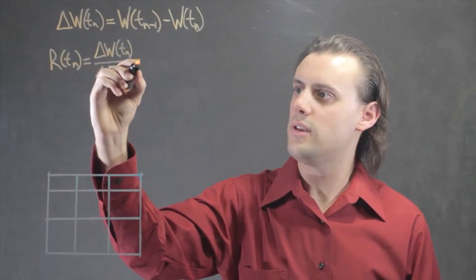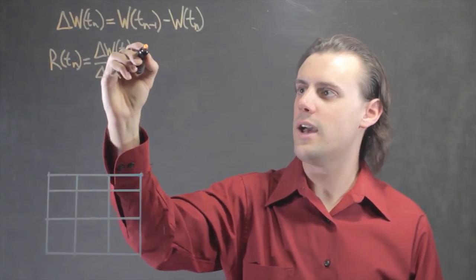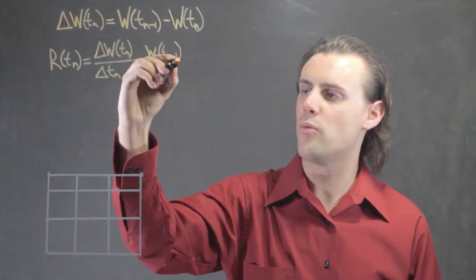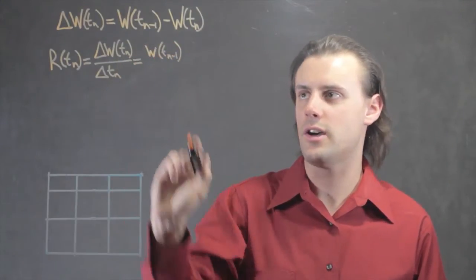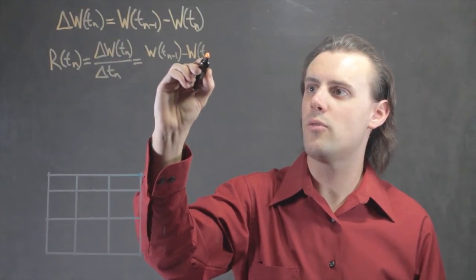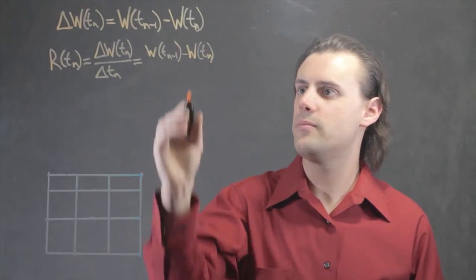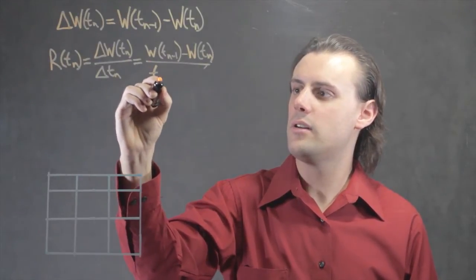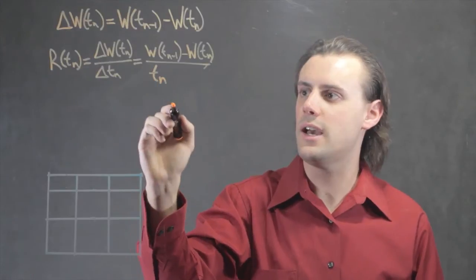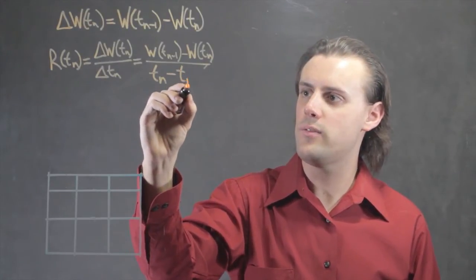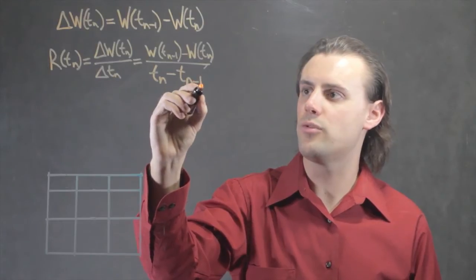This explicitly is given as WTn-1, the weight at the previous observation time, minus WTn, the weight for the observation, divided by time at the observation, Tn, minus the time from the previous observation, Tn-1.